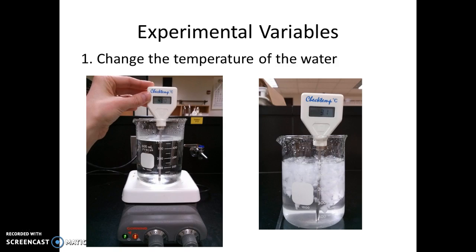Let's brainstorm some experimental variables you might want to test. One potential variable is changing the temperature of the water — you can use hot water to dissolve the Alka-Seltzer. I would suggest getting a big beaker filled with tap water and heating it using the hot plates in the cabinet underneath the sinks. I suggest heating the water between 40 and 60 degrees Celsius. Don't go too hot, as there's a risk of burning yourself. Set your hot plate at about five or six to get that nice temperature.